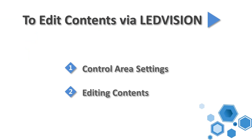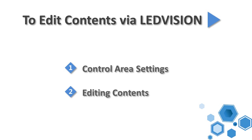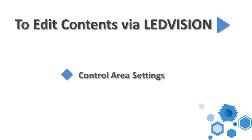Contents Editing. To edit contents via LED Vision, the first part is Control Area Settings, the second part is Editing Contents. Let's locate the first part: Control Area Settings.